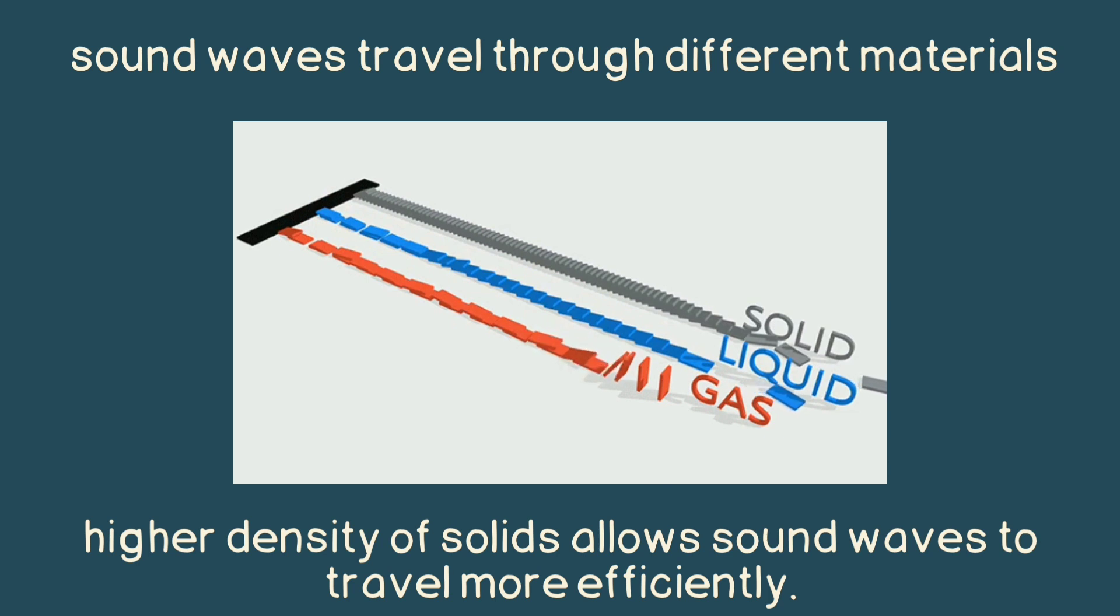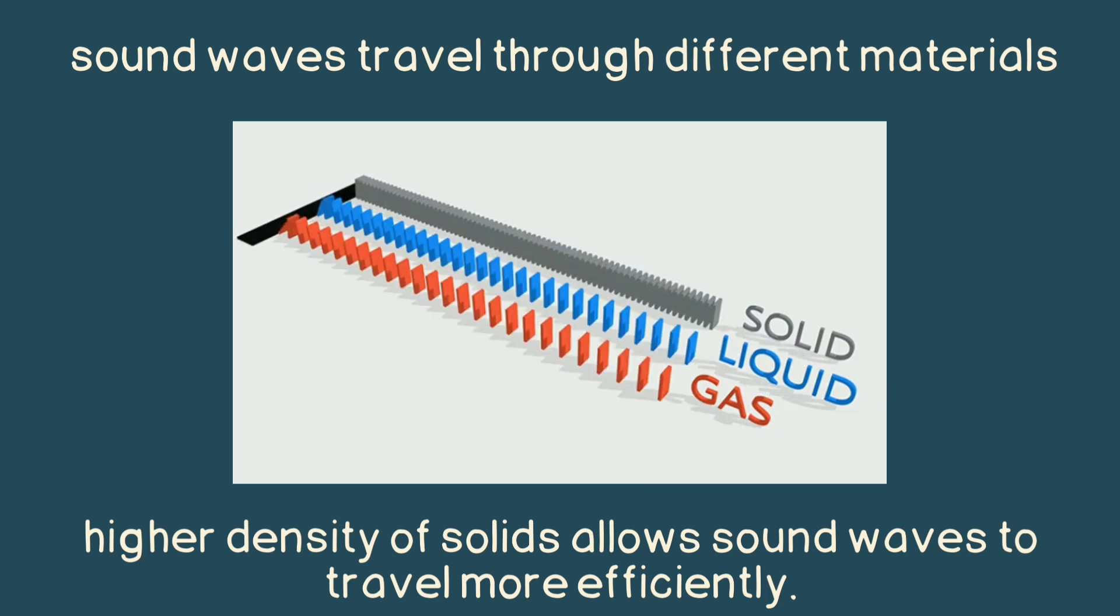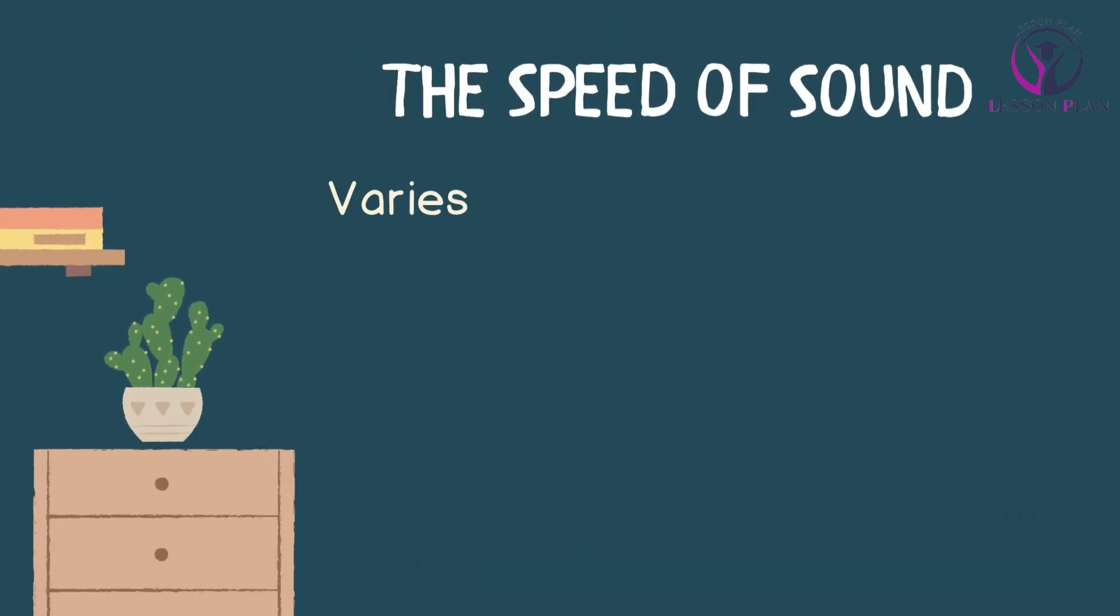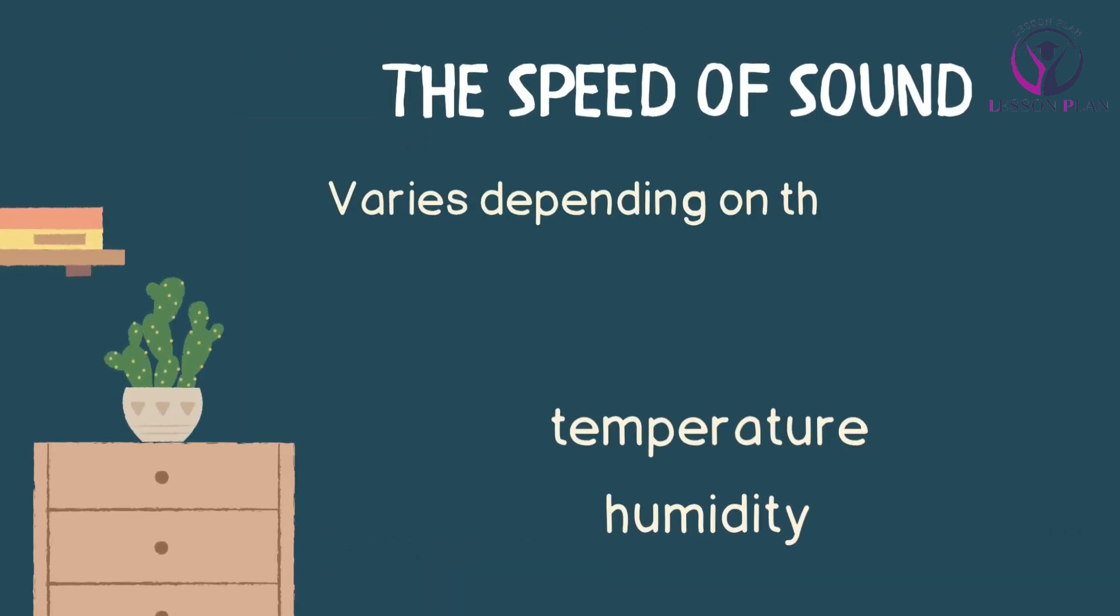Finally, let's talk about how sound waves travel through different materials. Sound waves travel fastest through solids, followed by liquids, and then gases. This is because solids have a higher density, which allows sound waves to travel more efficiently.